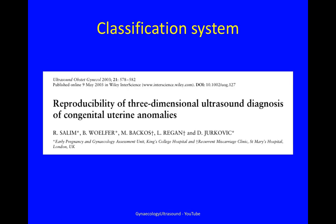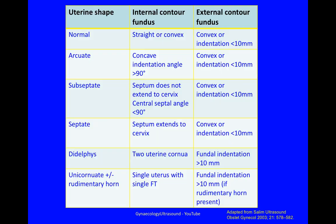There are various classification systems for congenitally abnormal uteruses, and I prefer this one — published in 2003 by Mr Salim. This is an excellent, easy to understand and very reproducible classification system. If you pause the video here, you'll be able to have a good read of this chart.